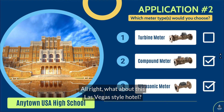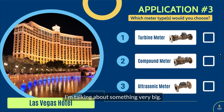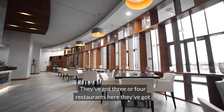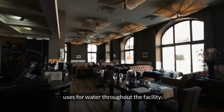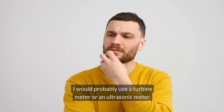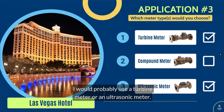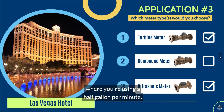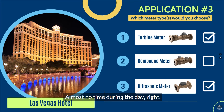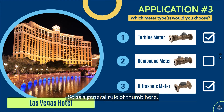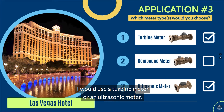What about this Las Vegas-style hotel — something very big, a 500 or 1,000-room hotel with three or four restaurants and uses for water throughout the facility? I would probably use a turbine meter or an ultrasonic meter. In a facility this large, you're not going to have those very low flows — almost no time during the day. There's going to be high flows going on at all times. So as a general rule of thumb, I would use a turbine meter or an ultrasonic meter.